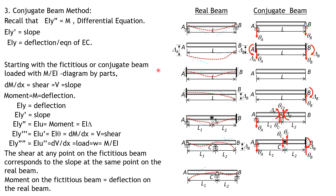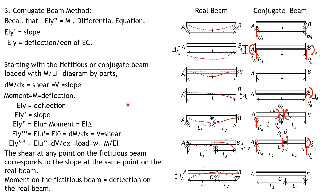We always assume data are positive, so when using the conjugate beam method, if the final sign for shear or theta is negative, it means the rotation is clockwise. If positive, the tangent rotates counterclockwise. For the sign convention for moment, positive moment is the 'smiley' convention — clockwise on the left face and counterclockwise on the right face.